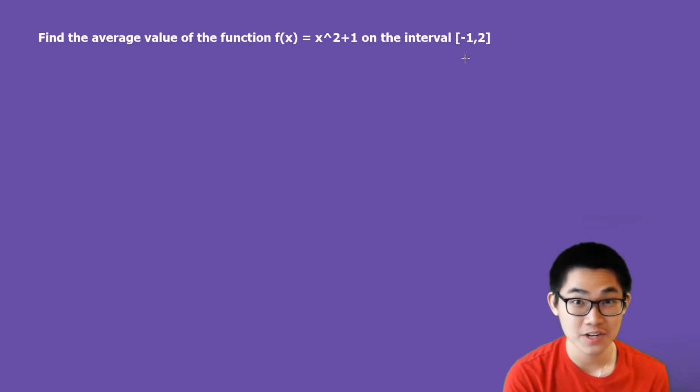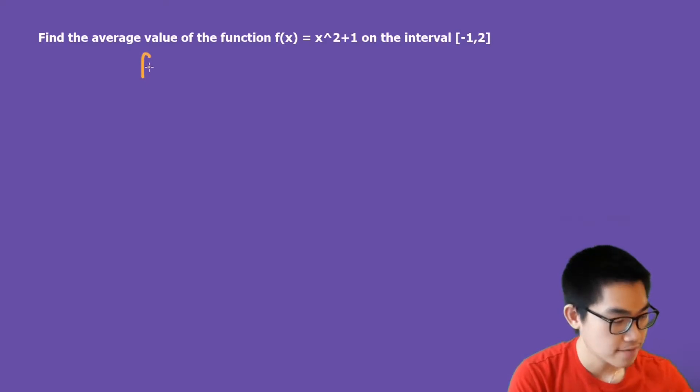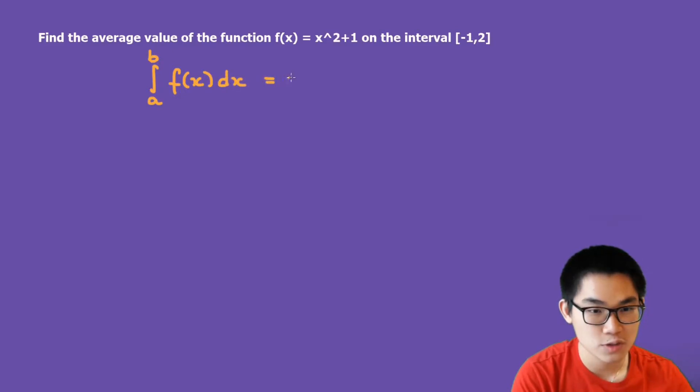The first thing I'm going to do is write out the formula. So we have the integral from a to b of f of x dx, and that is equal to f of c times b minus a.